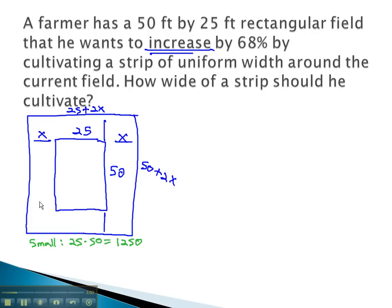The big rectangle he wants to increase by 68%. This means we need to add 68% to the area. 0.68 times 1,250 means he wants to add 850 square feet to his field.